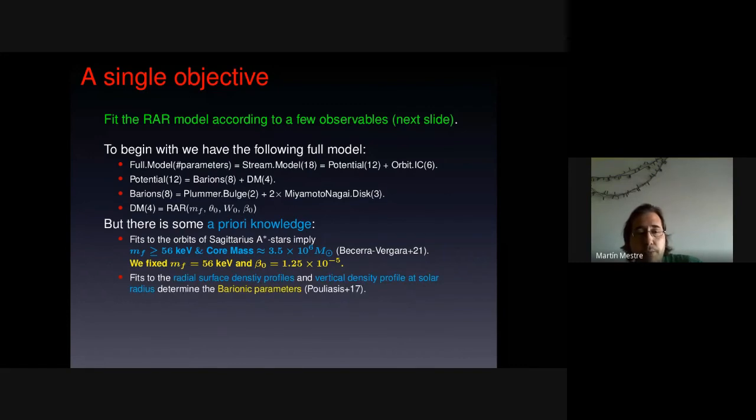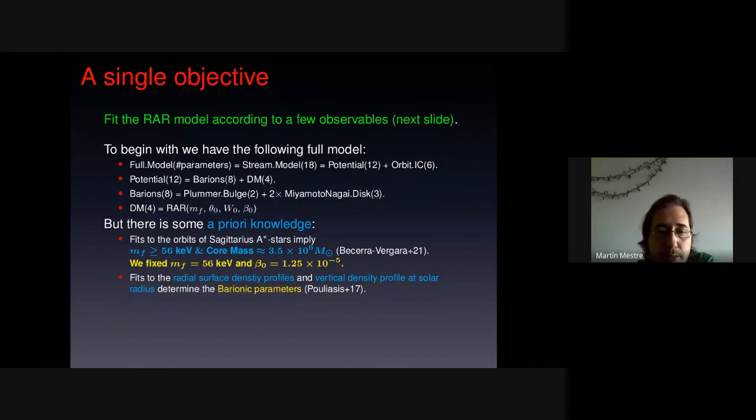Well, there are also fits made by Piffl et al. to the radial surface density profiles and to the vertical density profile at solar radius. These fits take into account observations of the baryonic component. They are not fits to any dark matter model or anything like that. They are counting, basically counting stars. So we are using them to determine the baryonic parameters as done by Piffl. And so we are left with only 8 parameters, 2 of the RAR model and 6 from the initial condition of the orbits.